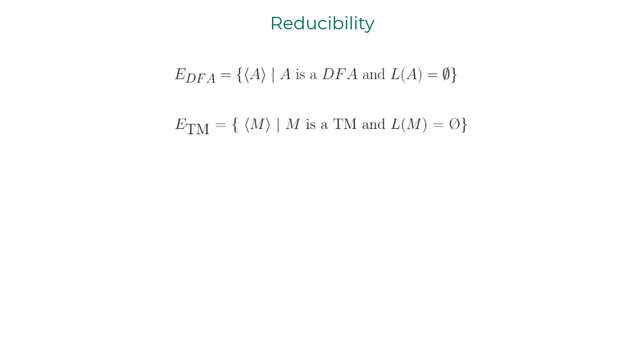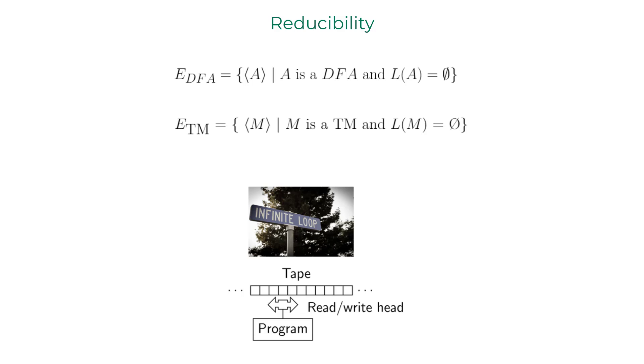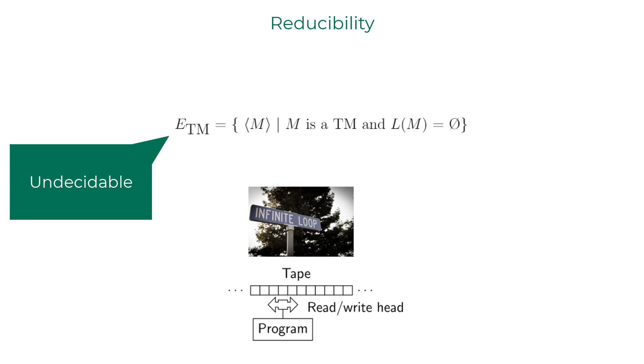Now let us look at the language ETM, which is the machine descriptions of all the Turing machines whose language is empty set. The fact that Turing machines can loop endlessly even though they have finite number of states makes it impossible to employ the technique we have used earlier for the DFAs.